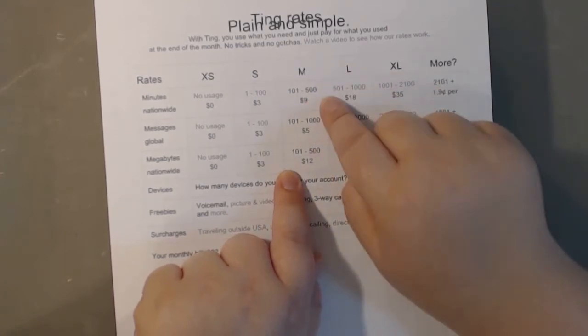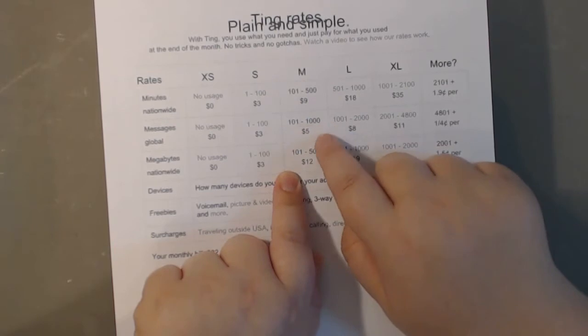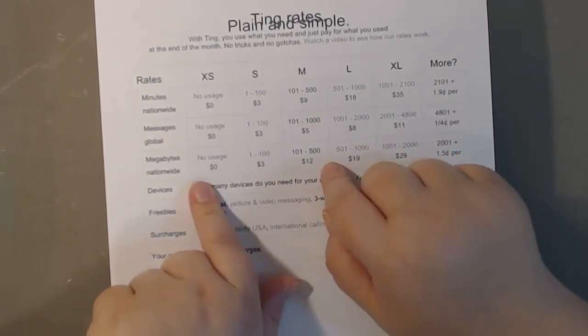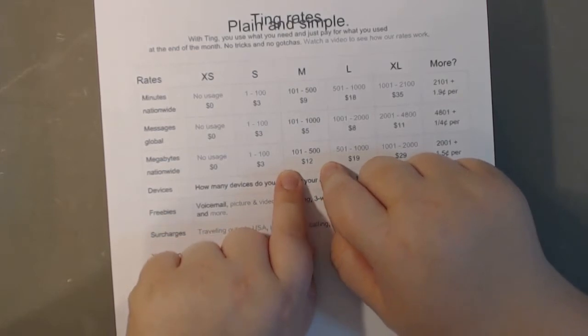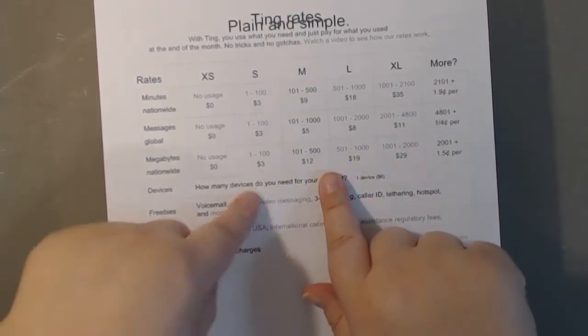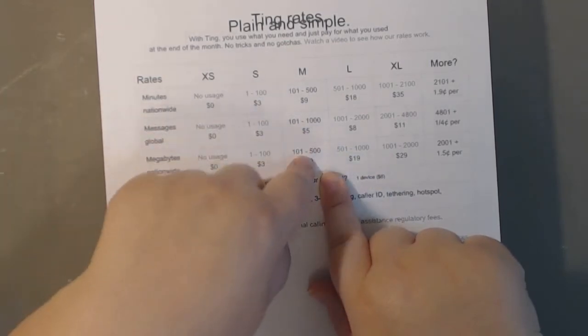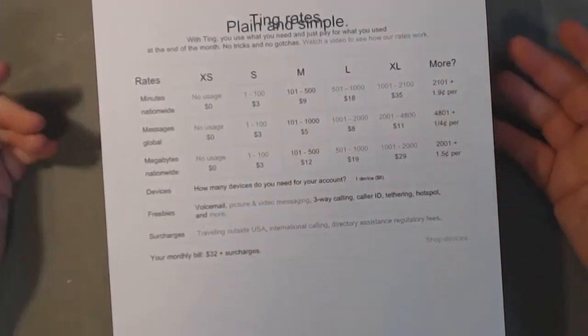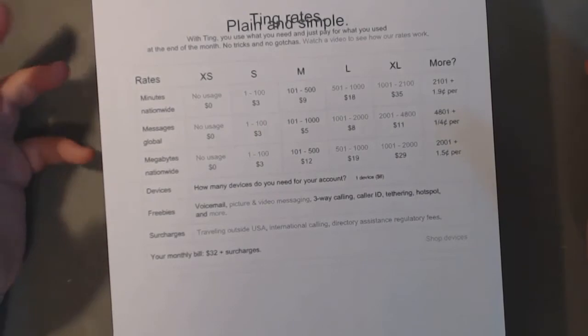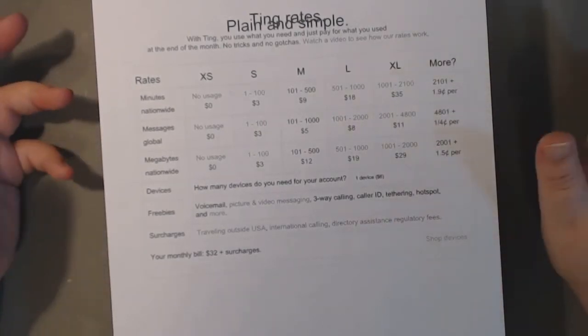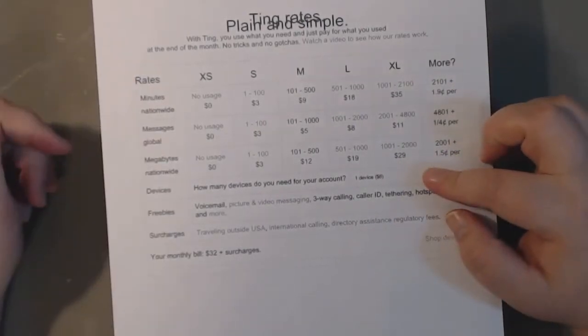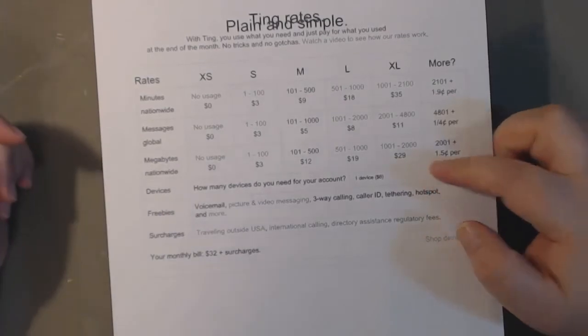And then it jumps from there. So say you use between 101 and 500 minutes, you're going to pay $9. If you use between 101 and 1,000 messages, it's going to be $5. And 101 to 500 megabytes, it's $12. So they jump. Like that one jumped $6, that one only jumped $2, and that one jumped $9. So you can even see what you're using and see kind of how that's going to shape up, and see if you can maybe not send as many text messages or maybe not use as many megabytes.